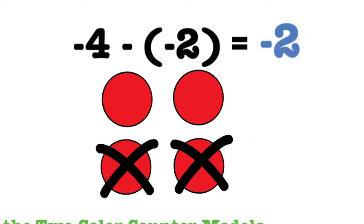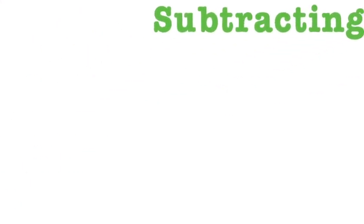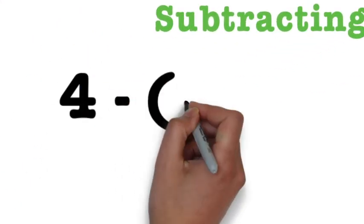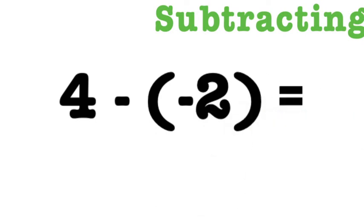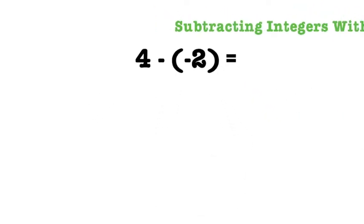Both problems we have seen so far had numbers that were either both positive or both negative. Let's look at a problem that has one positive number and one negative number, such as 4 minus negative 2.